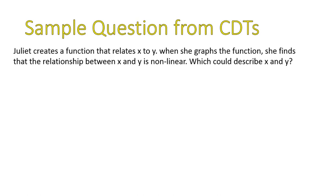Now, let's talk about, let's back up to math 8, get out of trigonometry. Go back to math 8 and talk about a sample question, a sample common core type question that would relate to all that we've talked about. Juliet creates a function for some unknown reason. Juliet's bored. She creates a function that relates x to y. When she graphs the function, she finds that the relationship between x and y is nonlinear, which would describe x and y. So we're going to need to know what linear and nonlinear look like. Remember the key. If it's linear, it has a constant rate of change, slope.